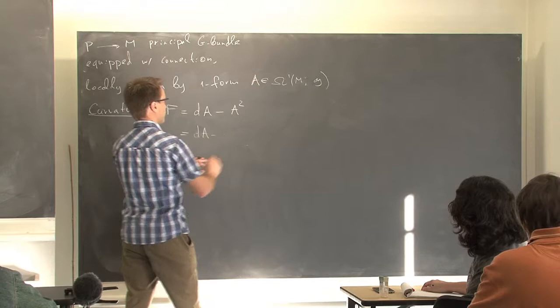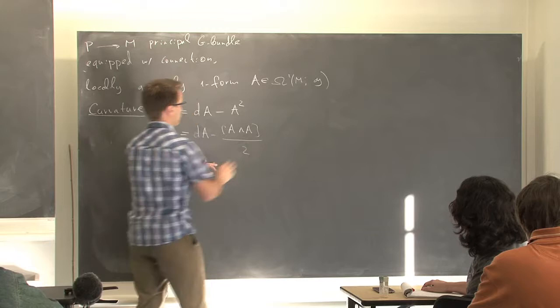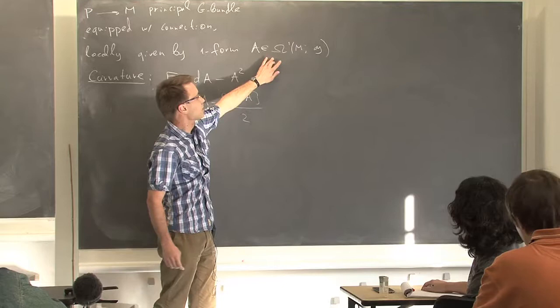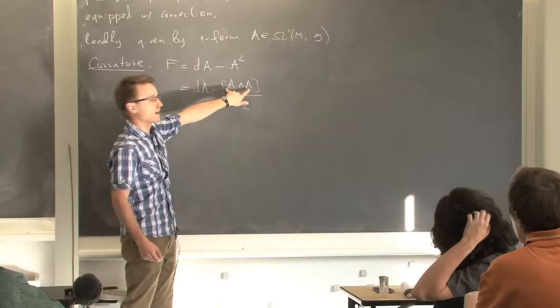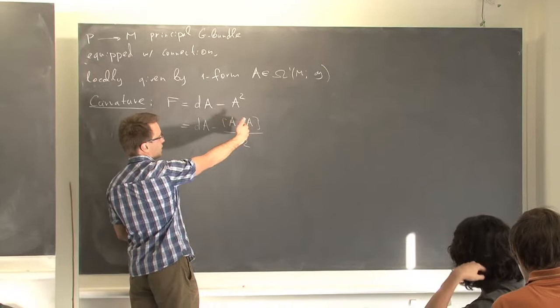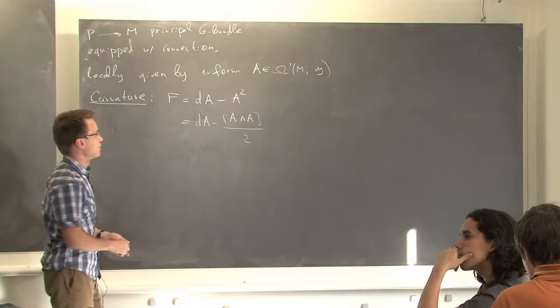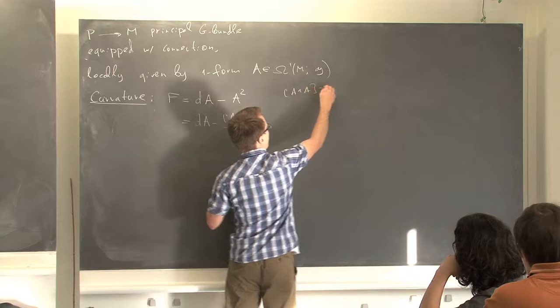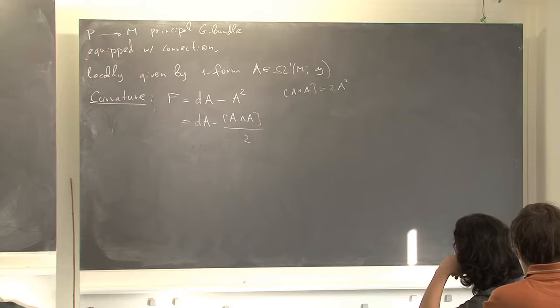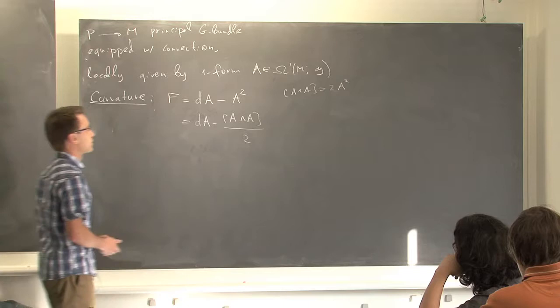A more invariant way, if you're not in the matrix group, would be to write dA plus A wedge A over 2. You can still wedge the form parts, then you'll have two elements of the Lie algebra, you bracket them and divide by 2. If you bracket the same element you get twice the multiplication — because of the anti-symmetry of the wedge product. So these two expressions are the same, and this is the invariant expression.